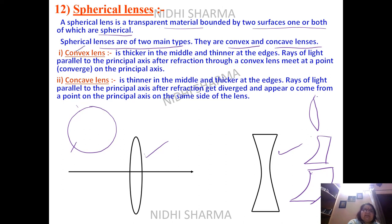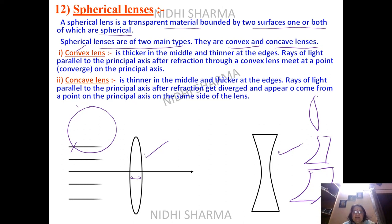In a convex lens, the middle part is thicker and the edges are thinner. A concave lens is thinner in the middle and thicker at the edges. When rays of light come parallel, they are converged to a focus point — so a convex lens is a converging lens.